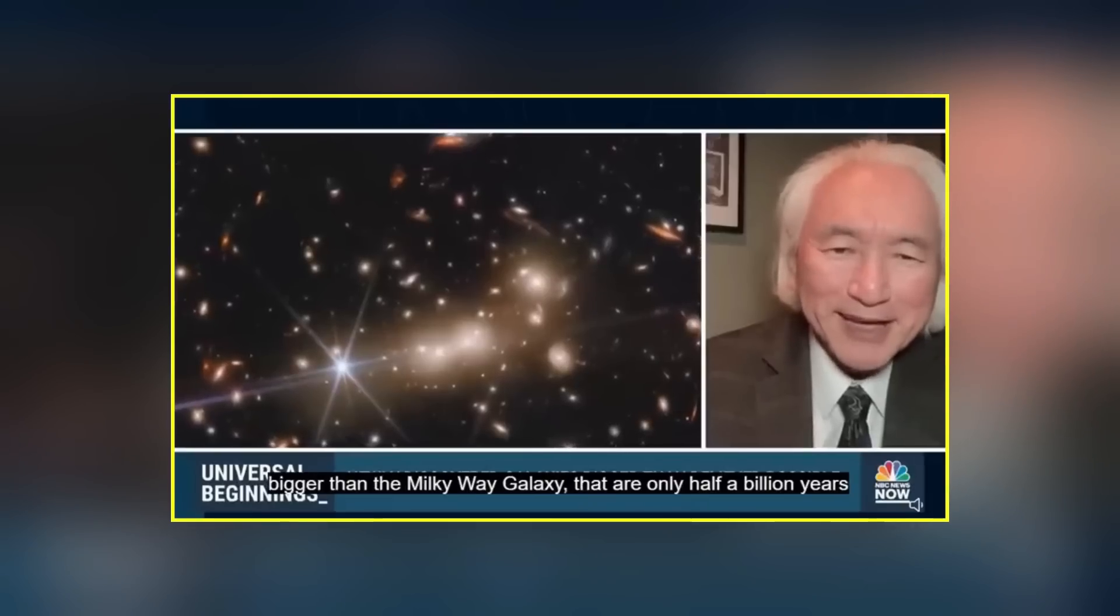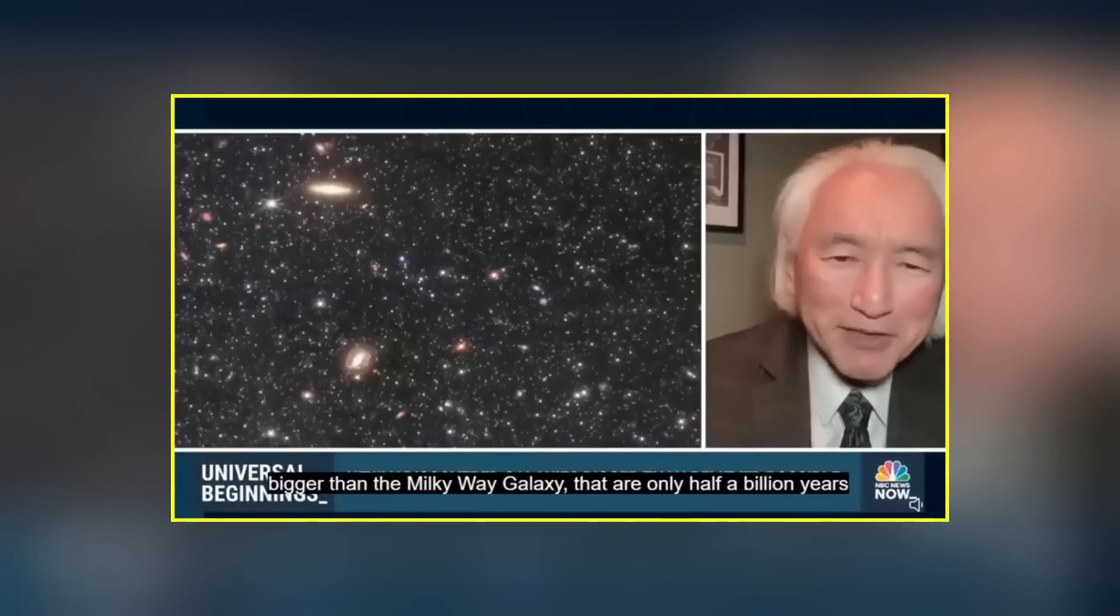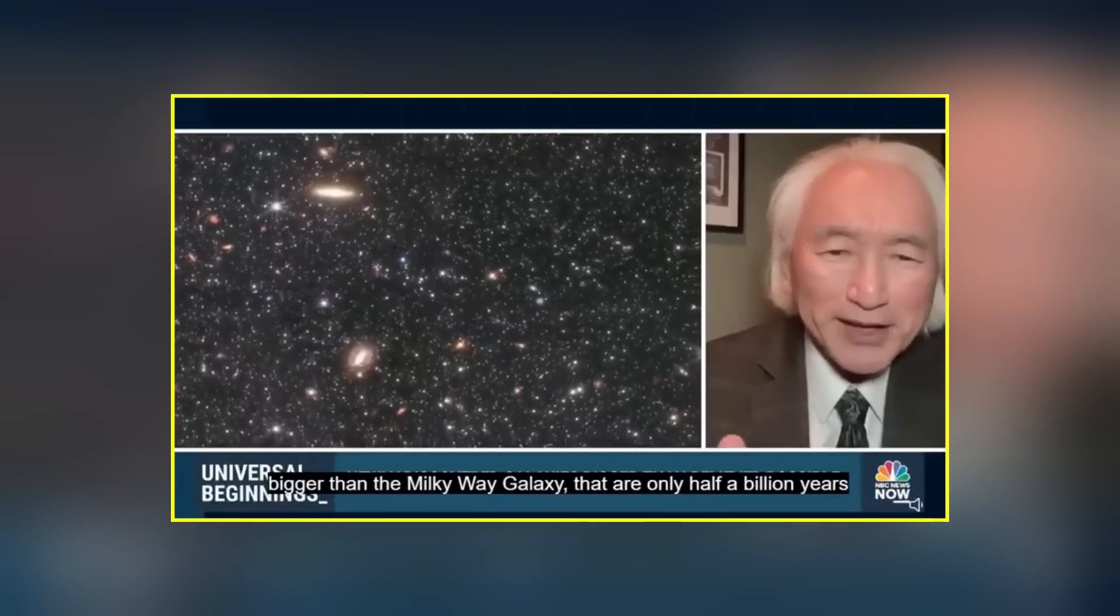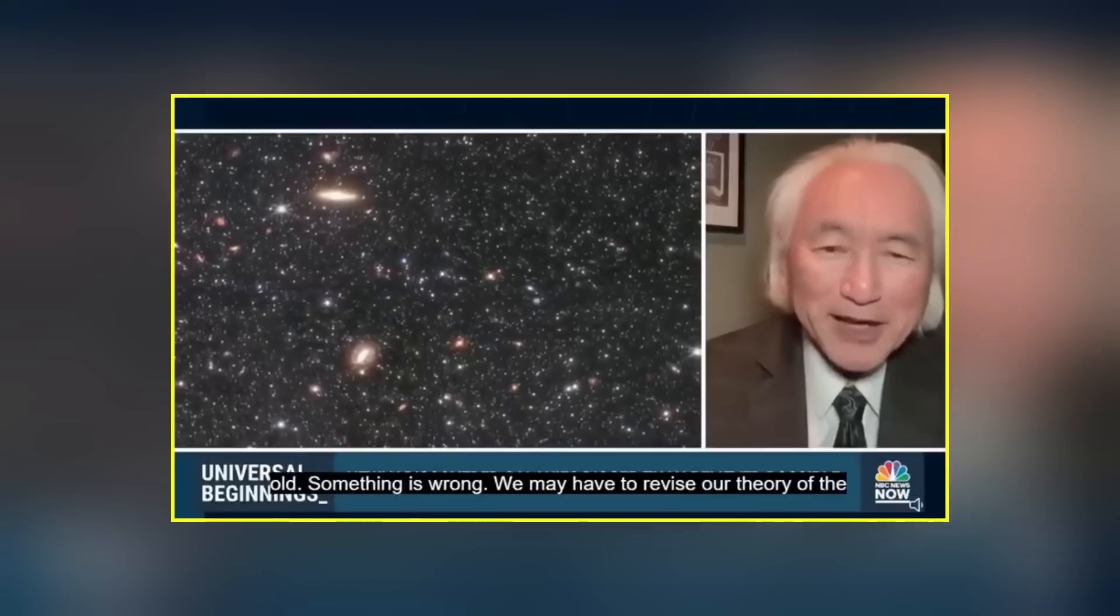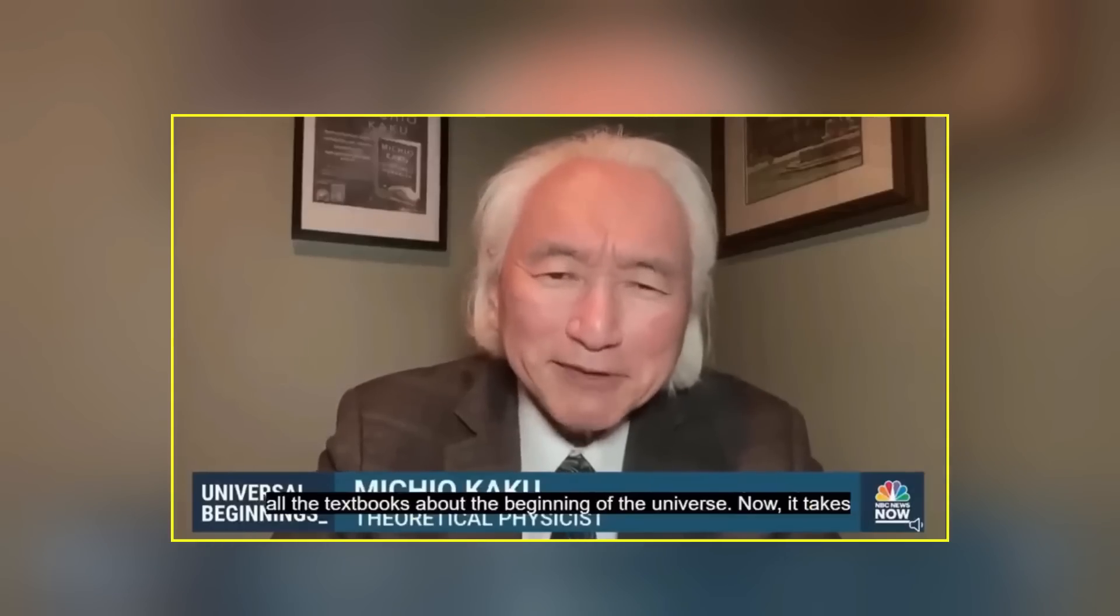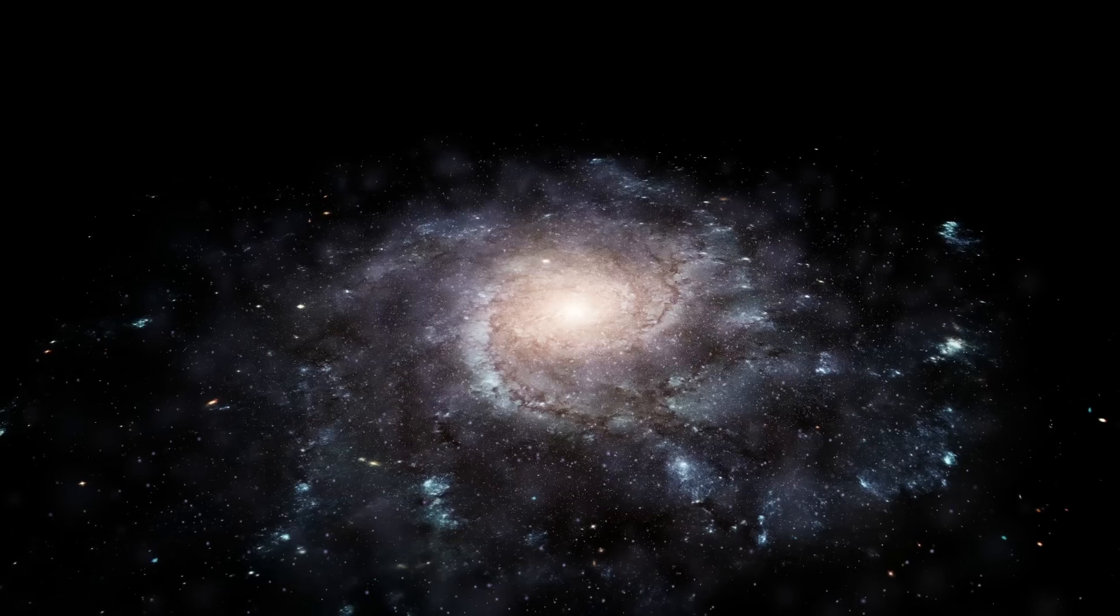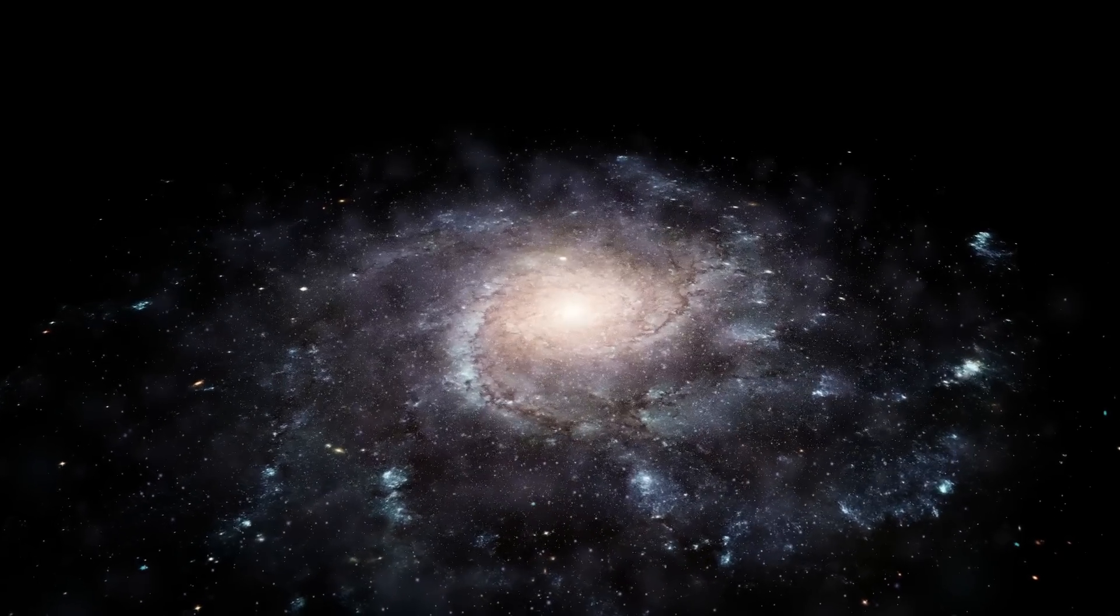A year ago, famous American physicist and science communicator Michio Kaku shared his thoughts on six primordial galaxies discovered by the James Webb Telescope in an interview with NBC News. It takes many billions of years to create a galaxy like the Milky Way galaxy with 100 billion stars, many billions of years old.